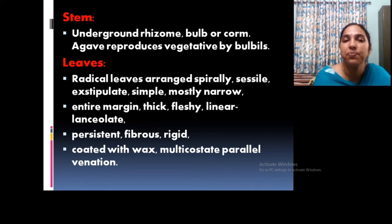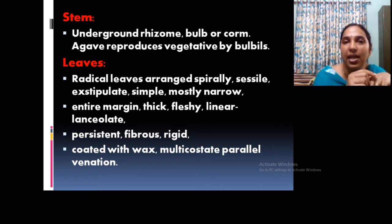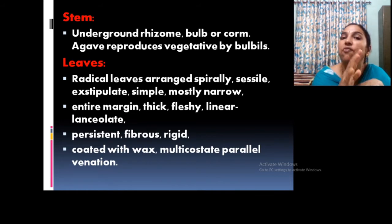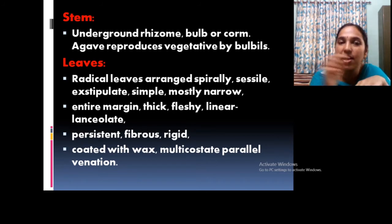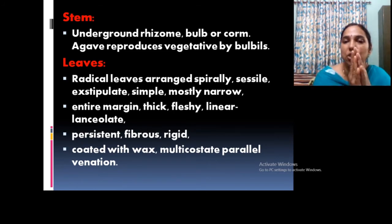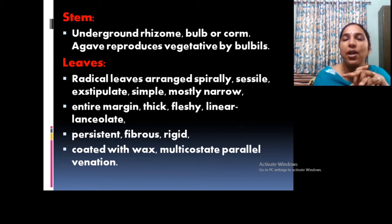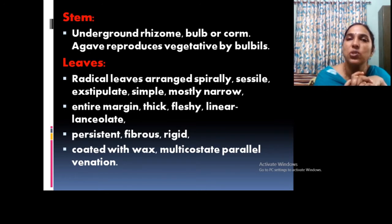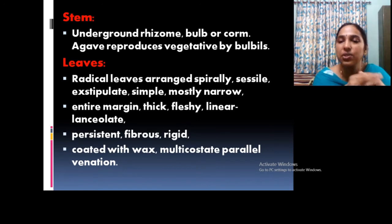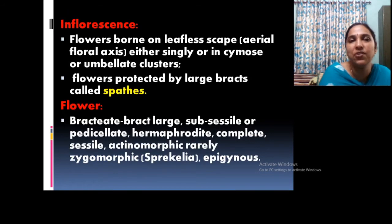The stem is an underground stem — bulb, corm, or tubers — and vegetative growth is by means of bulbils. Leaves are radical, either spirally arranged, usually sessile without any stalk, exstipulate, and fleshy in nature. Most of them have smooth texture with narrow linear leaves and entire margins. Leaves are usually persistent or fibrous and rigid, coated with wax, with parallel venation.